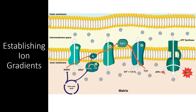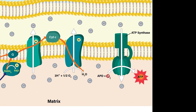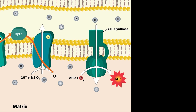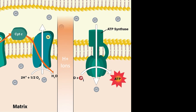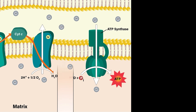We've seen how facilitated diffusion can alleviate a concentration gradient. So that begs the question, how are these concentration gradients created to begin with? The answer is active transport. For example, consider the enzyme that creates ATP — ATP synthase. ATP synthase relies on a gradient of hydrogen ions to operate and create new ATP molecules.